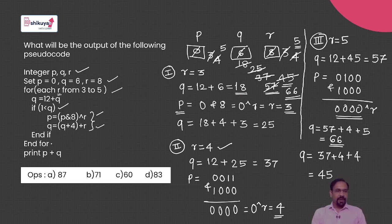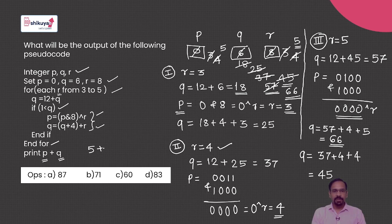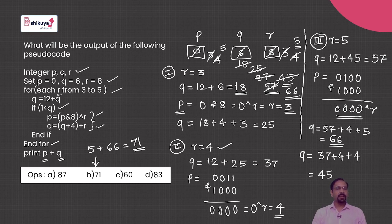We come out of the for loop now that the value of r is 5, and then print the result of p plus q. The value of p is 5 and the value of q is 66. So 66 plus 5 gives 71. Checking the given options, option B is 71. Therefore the correct output of this pseudocode is 71, option B.